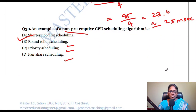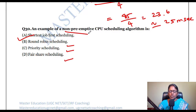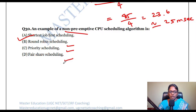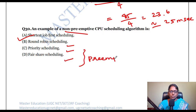An example of a non-preemptive CPU scheduling algorithm: the process does not give up the CPU until completion. Shortest job first is non-preemptive. Round robin, priority, and fair share scheduling are preemptive (preemptive versions also exist).